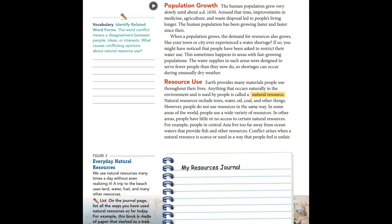At the very bottom, we have a My Resources Journal. It says we use natural resources many times a day without even realizing it. A trip to the beach uses land, water, fuel, and many other resources. On the journal page, list all the ways you have used natural resources today.